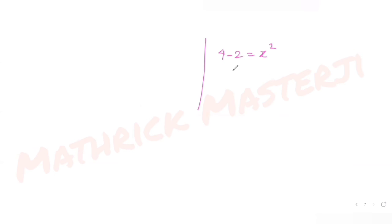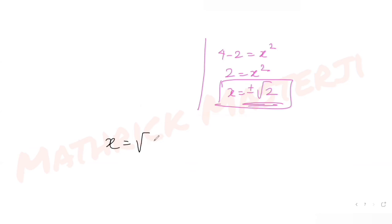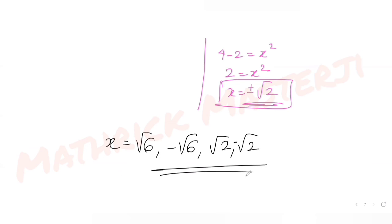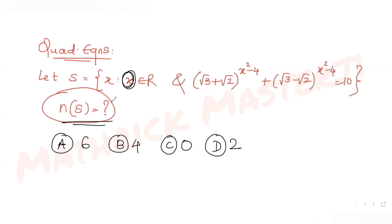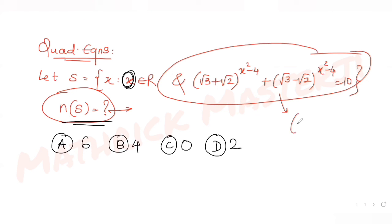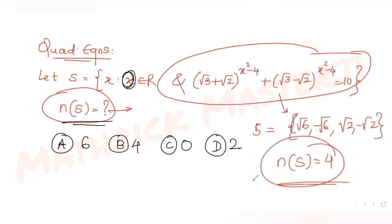From −x² + 4 = 2, we get x² = 2, so x = ±√2. That gives two more values. Combined with the first case (x = ±√6), we have four total values of x: √6, −√6, √2, −√2. These are the four elements in set S.